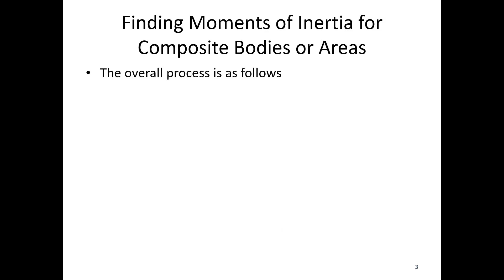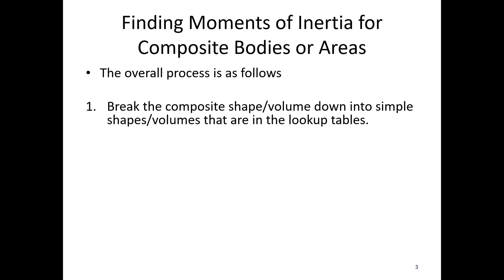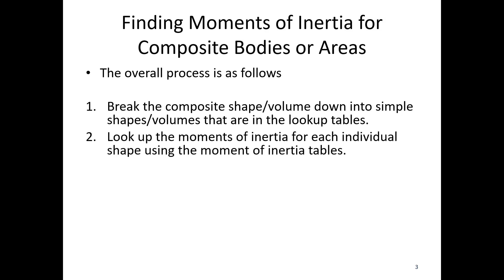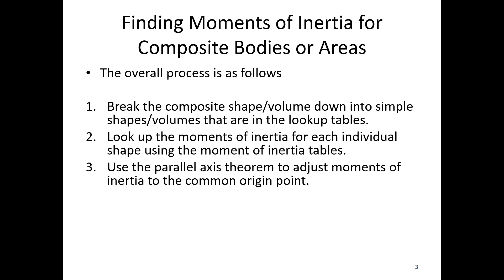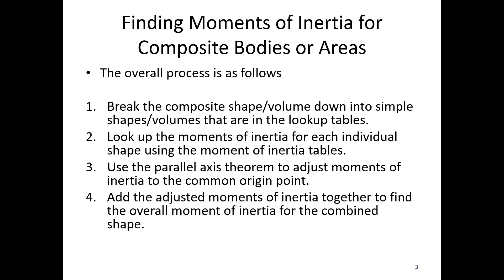The overall process is as follows. Number one, we're going to break our composite shape or volume down into simple shapes or volumes that are in the lookup tables. We're going to look up moments of inertia for each individual shape using the moment of inertia tables. We're going to use the parallel axis theorem to adjust the moments of inertia about a common origin point. And finally, we're going to add the adjusted moments of inertia together to find the overall moment of inertia for our combined shape.